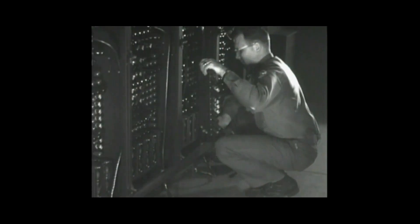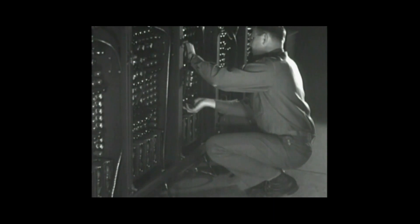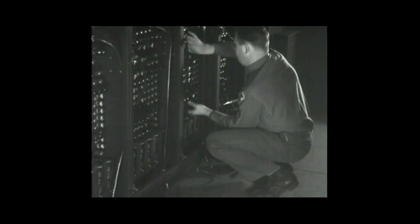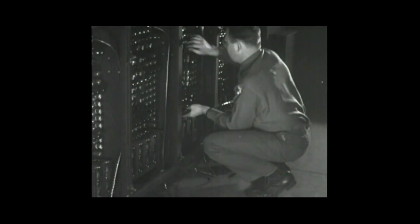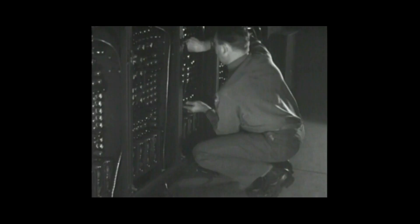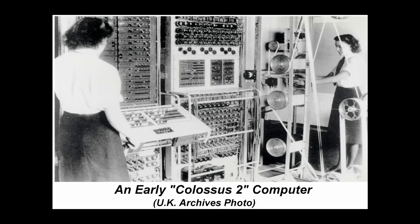Broadly speaking, the electronic digital computers built during the 1940s up to about 1956 are referred to as first-generation computers. One characteristic of this first generation was a massive use of vacuum tubes. Among the notable examples is the first Colossus computer, which began operation in 1943 and contained 1,600 vacuum tubes.